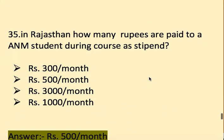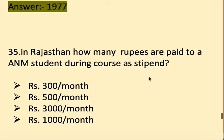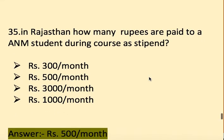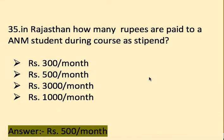Next question: In Rajasthan, how many rupees are paid to an A&M student per month during the course? Options: three hundred rupees, five hundred rupees, three thousand rupees, and one thousand rupees per month. The right answer is five hundred rupees per month.